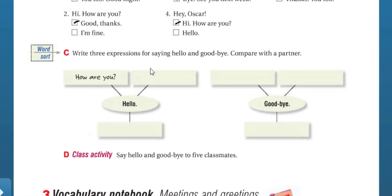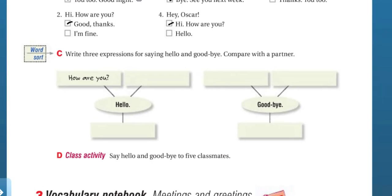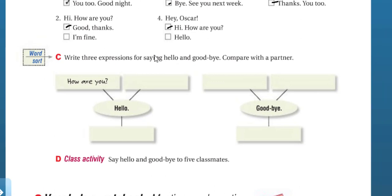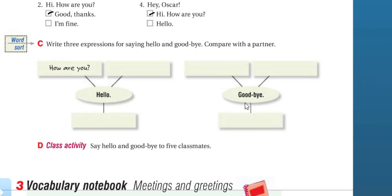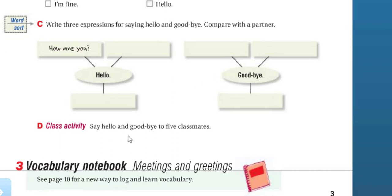Write three expressions for saying hello and goodbye, then compare with a partner. For example: 'Hello,' 'How are you?' 'Hi' — you can use 'hi' too. What about saying goodbye? 'Goodbye,' you can say 'bye,' 'see you next week,' 'good night.' Now you have to say hello and goodbye to five classmates.